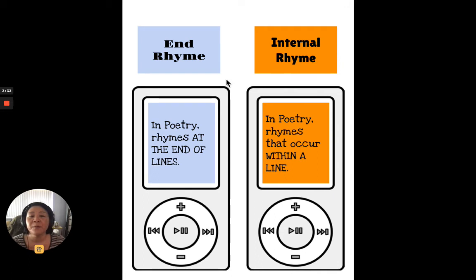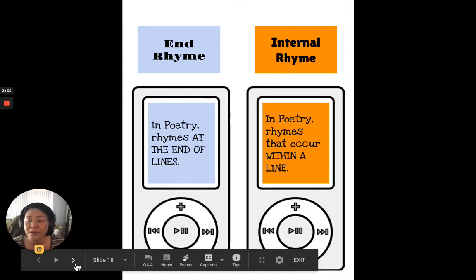And so in poetry, we have an end rhyme and an internal rhyme. So an end rhyme is where the poems rhyme at the end of the lines. But an internal rhyme is where a rhyme happens within a line, in the same line. So we're going to show you some examples of that.